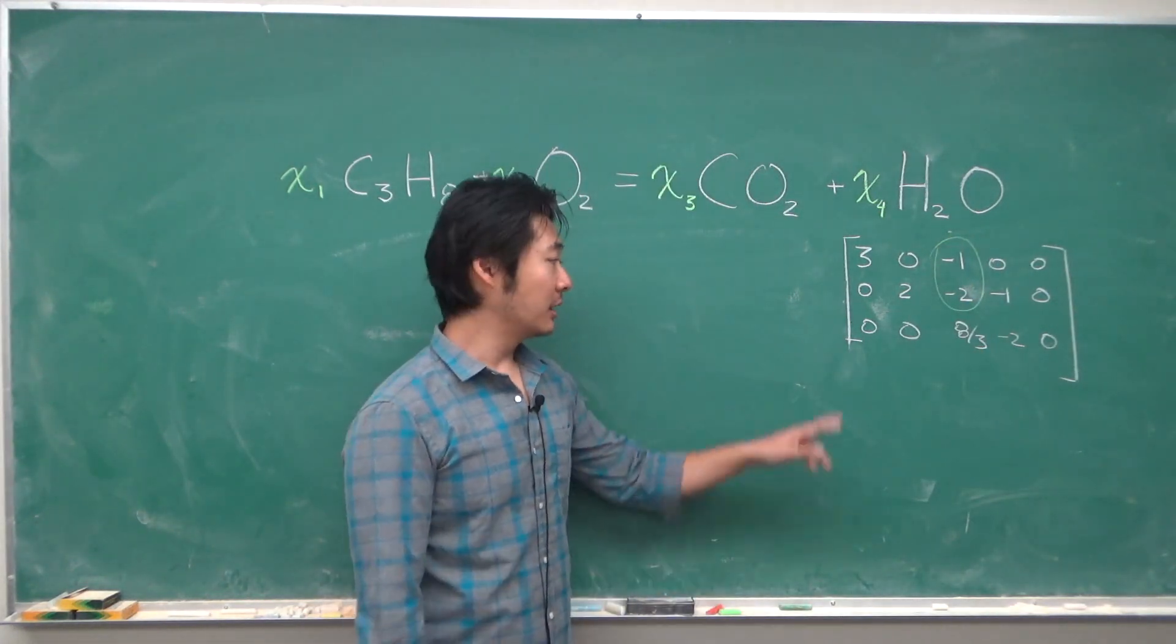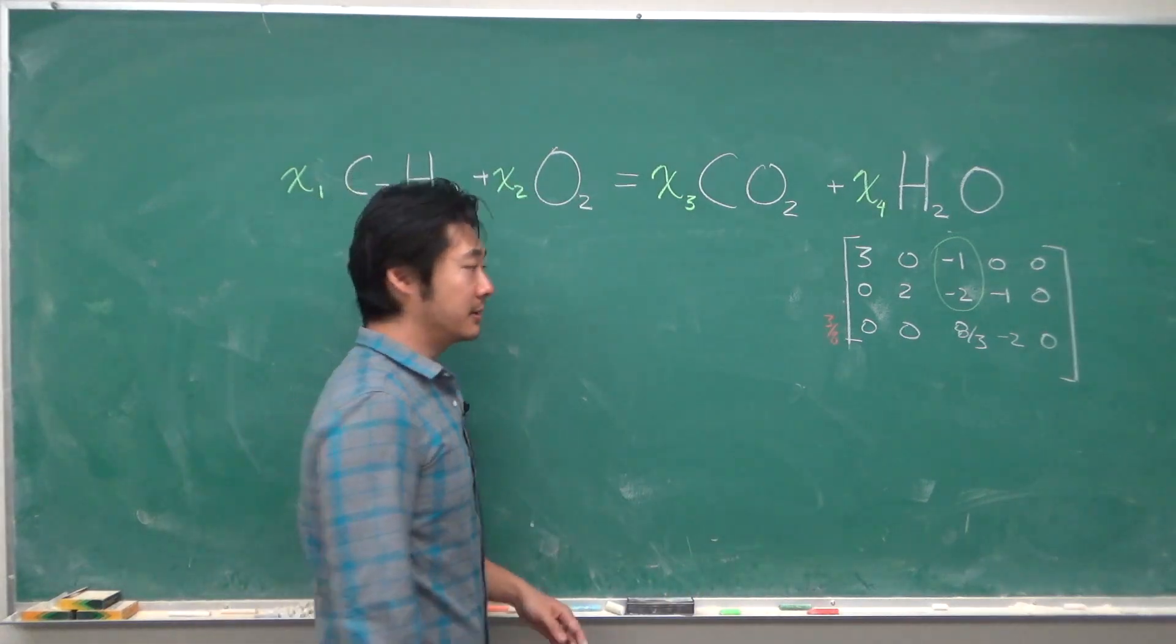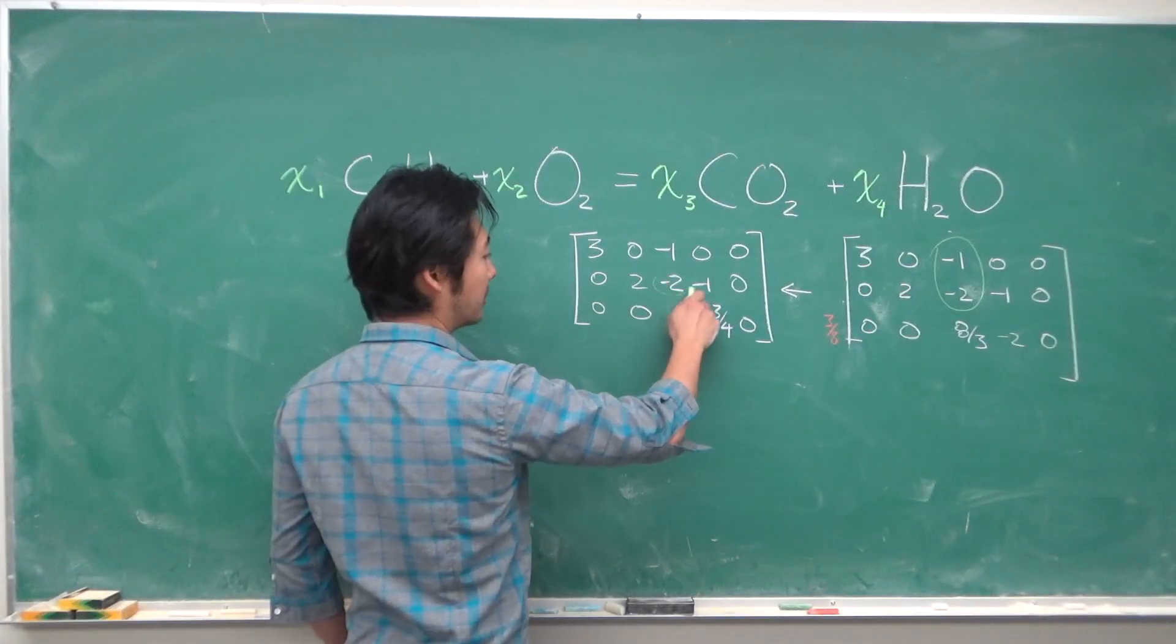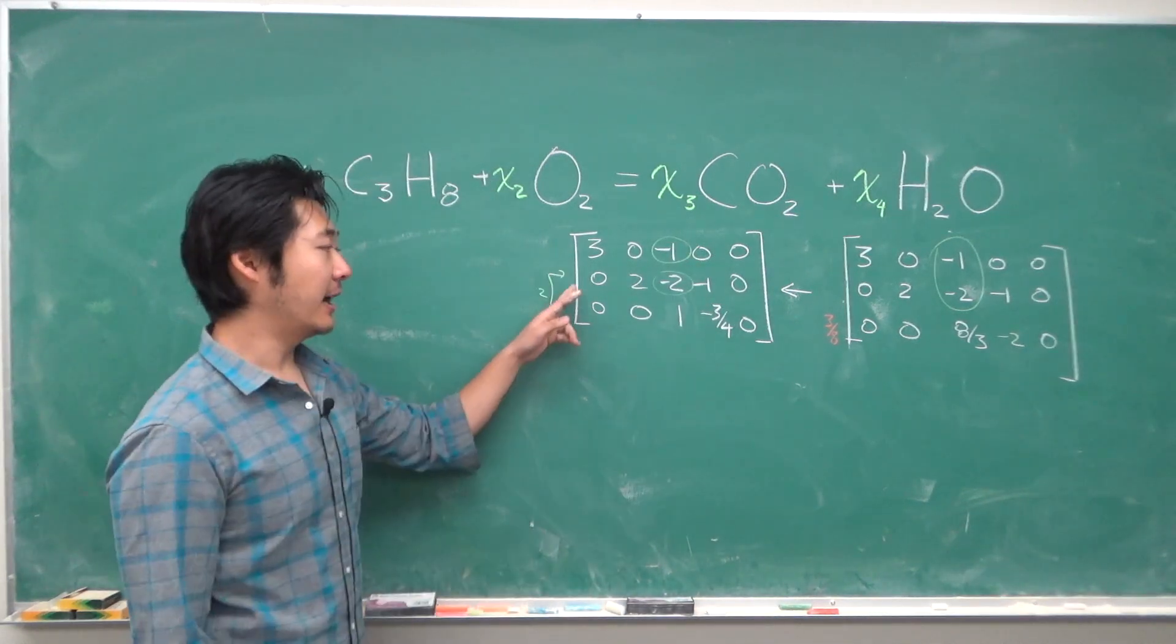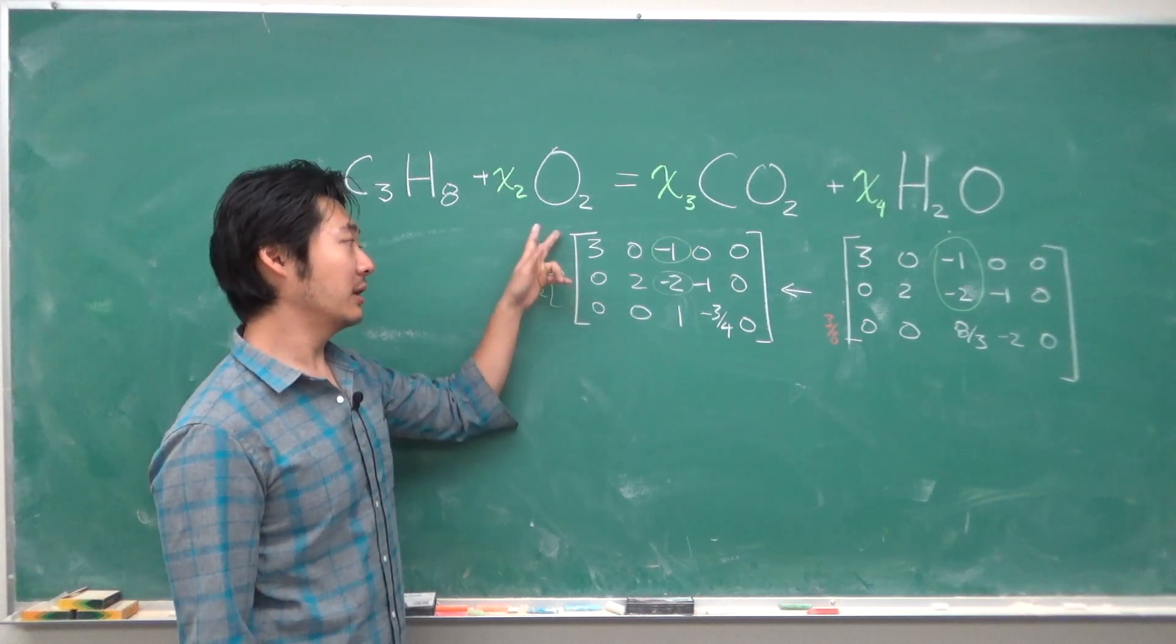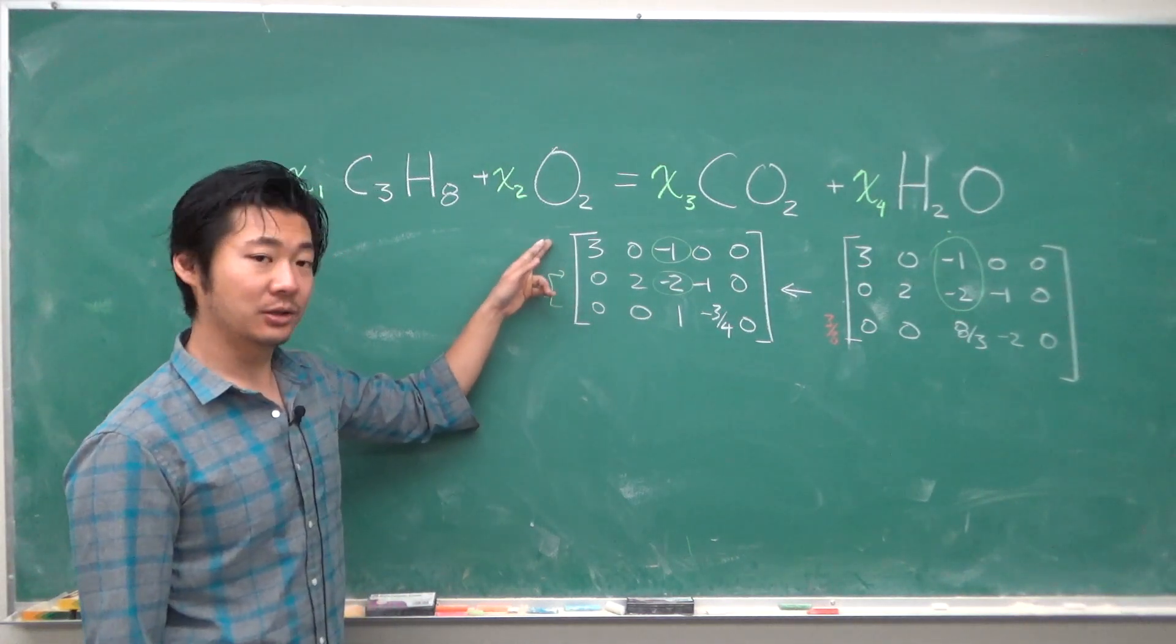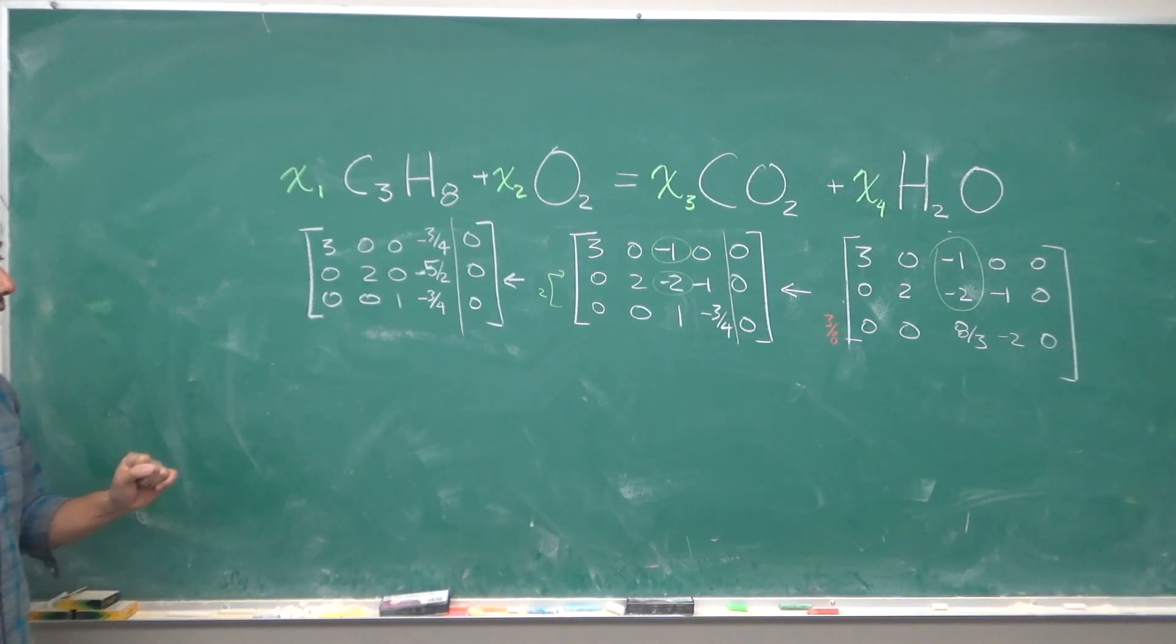To make computation easier, let's first multiply this row by 3 eighths, so that we get something like this. Now to get rid of these two, we'll multiply this row by 2 and add it in to the second row. And we will multiply the third row by 1 and just add it in to this row. So that we get something like this. We're almost done.